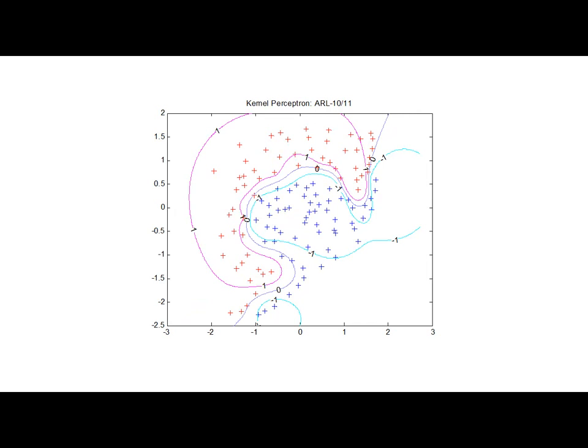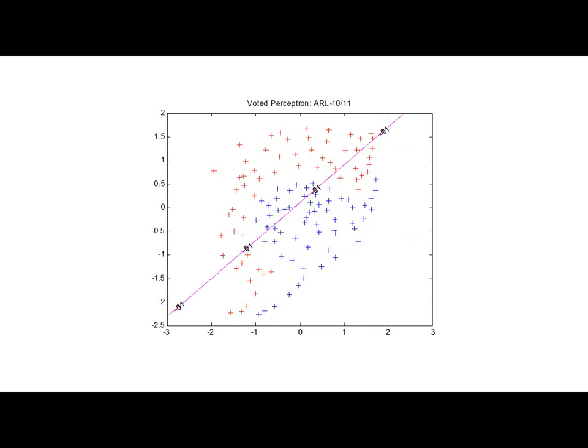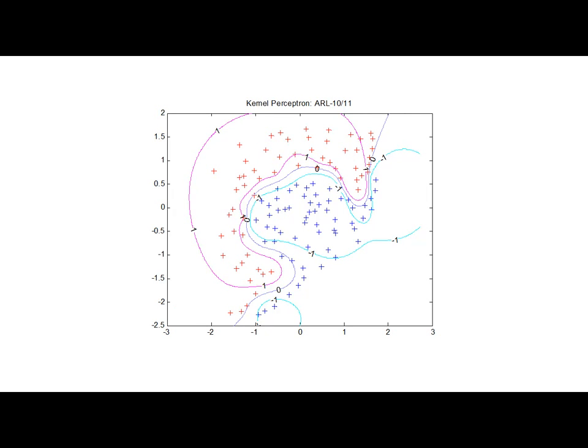Here is the result of using the kernel perceptron learning algorithm on this data set. In the kernel perceptron learning algorithm, we don't need to construct the basis functions — this is the main benefit of using kernels instead of hand-coding the basis functions. Here is the figure showing just the zero-level contour, and we can see the kernel perceptron learning algorithm performs very well in separating this kind of data set.